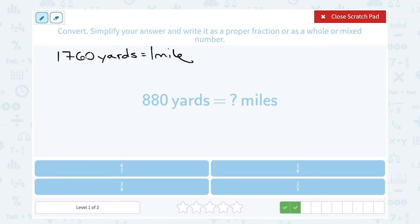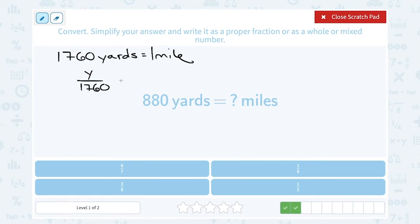So that means if I know my number of yards, my number of yards divided by 1,760 should give me my answer in miles. Well, in this case, I have 880 yards and I'm going to have to divide that by 1,760.